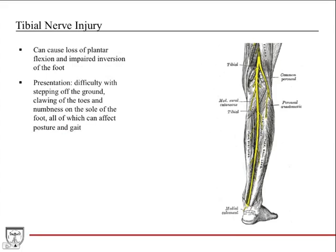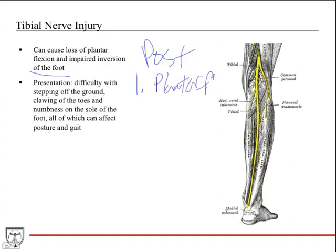Tibial nerve injury causes loss of plantar flexion and impaired inversion of the foot, since the tibial nerve supplies all posterior compartment muscles responsible for those actions. Clinically, patients have difficulty stepping off the ground, clawing of the toes, and numbness on the sole of the foot — all of which affect posture and gait.